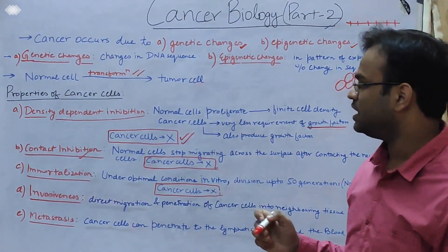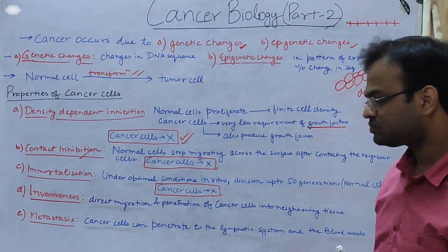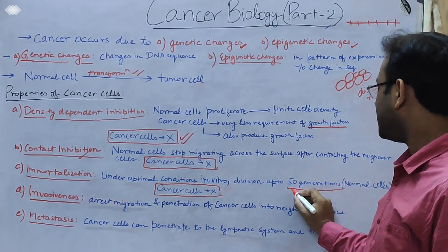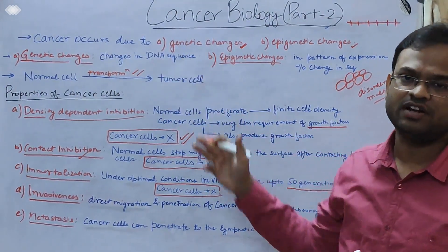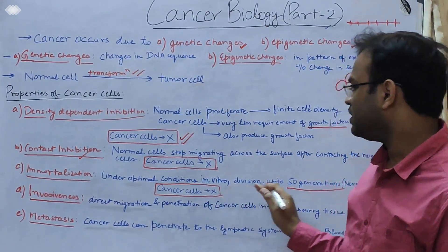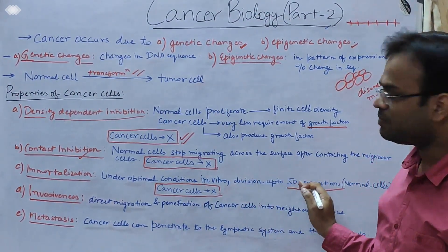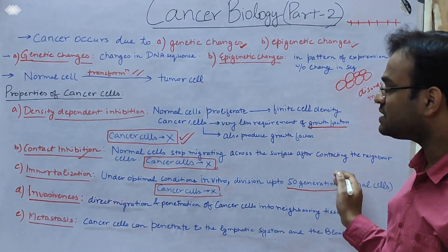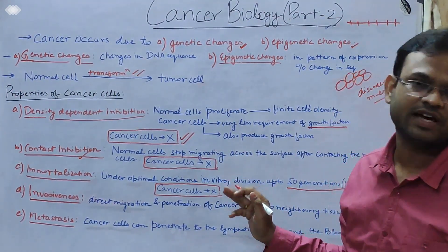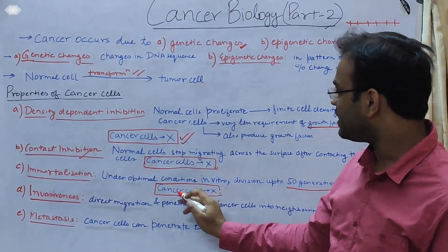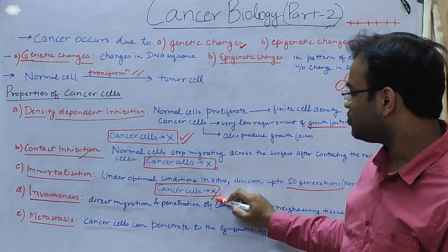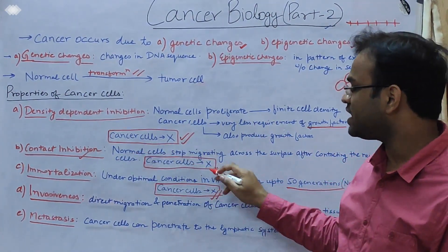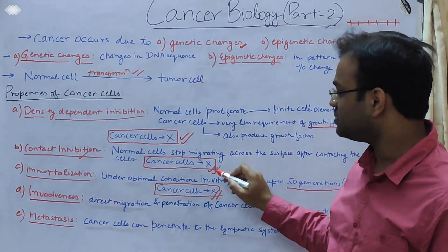The next property is immortalization. Normal cells proliferate up to approximately 50 generations on average, both in vitro and in vivo. However, cancer cells can grow up to n number of generations — therefore cancer cells are called immortal cells. The rule of immortalization followed by normal cells is not followed by cancer cells, just as contact inhibition is not followed by cancer cells.